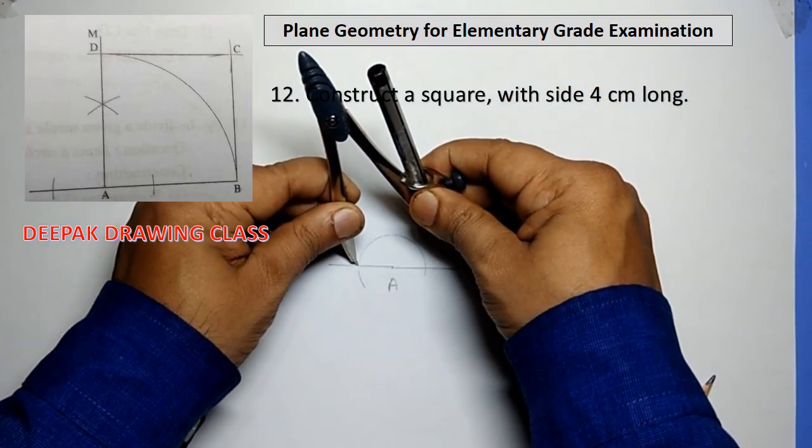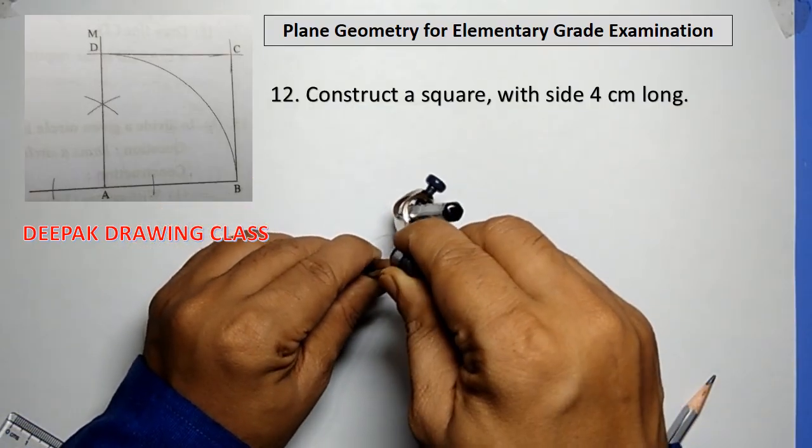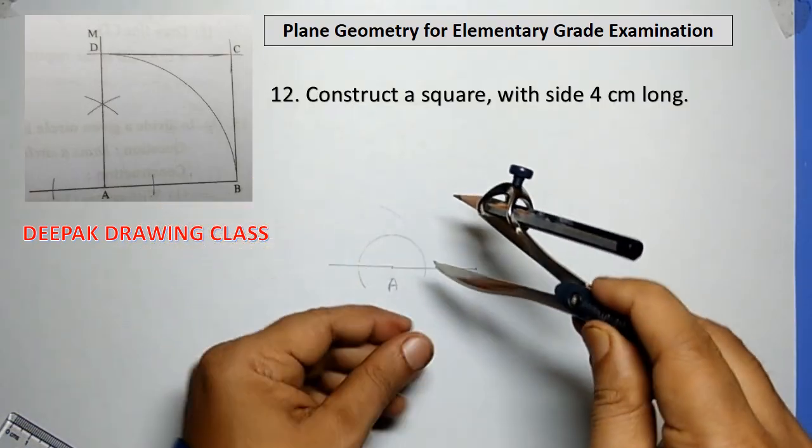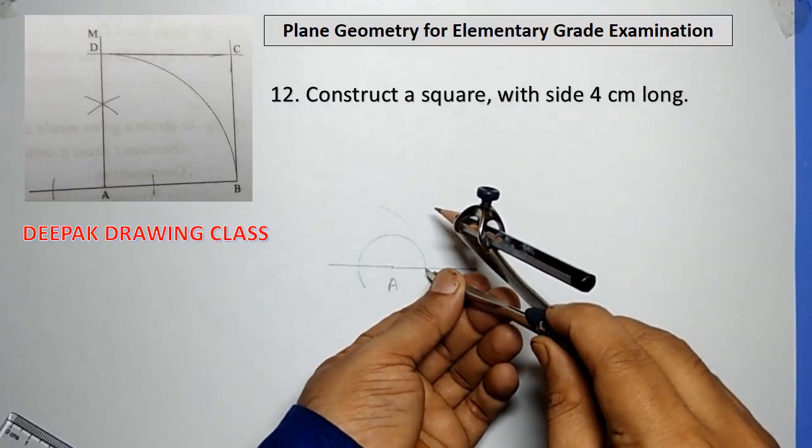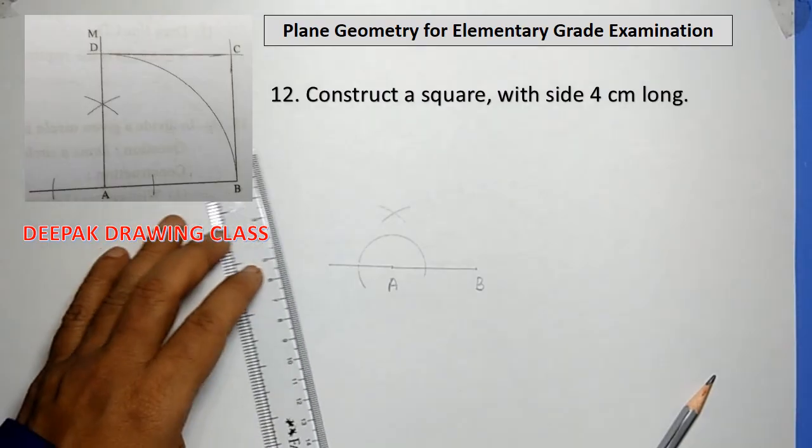Now, with one point of arc, adjust the distance of compass to another point of arc and draw an arc above the given line. Repeat the same and draw another arc above the given line.